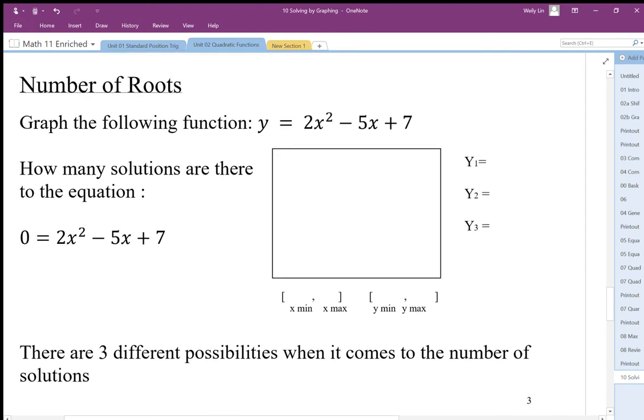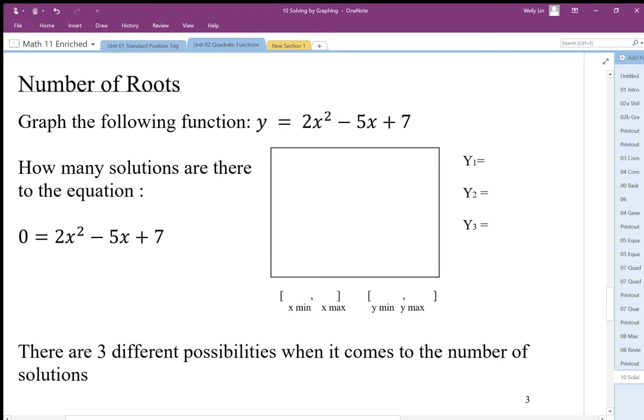We also want to look at the number of roots or number of solutions. There are some quadratics that don't have any solutions, some of them have one solution, and some of them have two solutions. If I graph this function, I'm going to end up with a graph that looks like this. My parabola has my vertex here. If I just find my vertex, my vertex is at 1.25, 3.875, and it opens upwards.